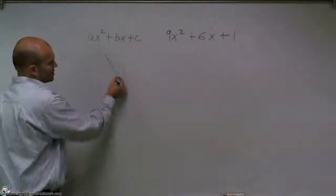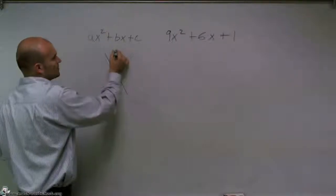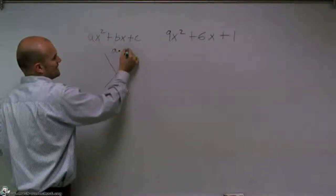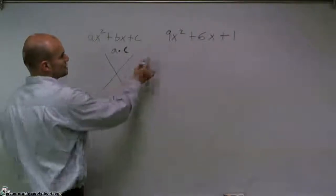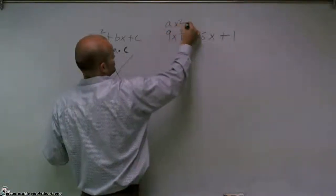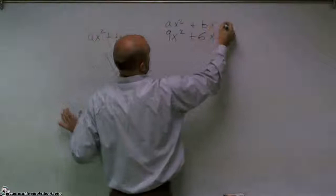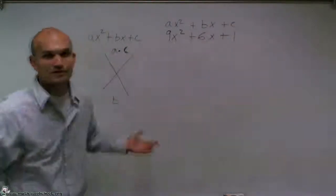Now, if I have it in quadratic form, I can factor the trinomial by multiplying my a times my c and then putting the b on the bottom. So in this term, I'm going to have my ax² + bx + c, as this is in quadratic form, obviously.